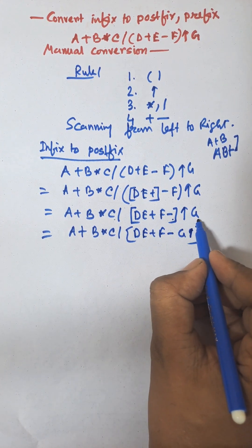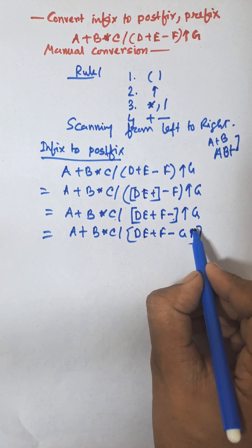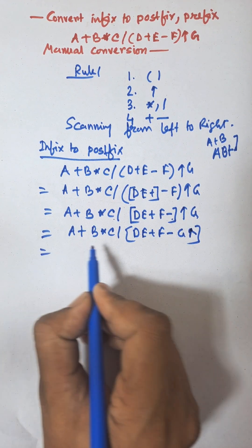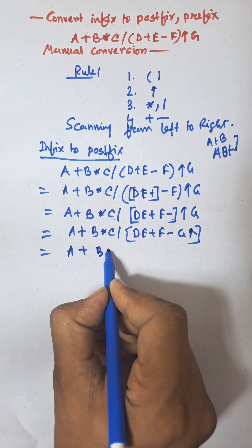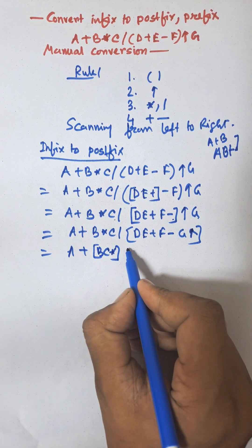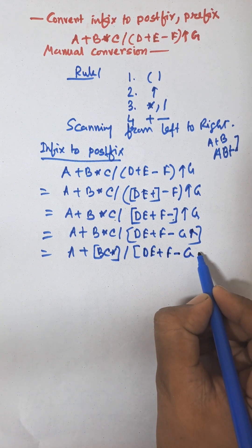This is known as A and this is B. A, B and exponential transfers to the last position. Now according to rule, into and division have the same priority but into is on the left hand side. So B C into will be performed, divided by D E plus F minus G exponential.